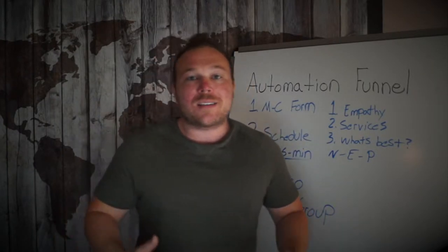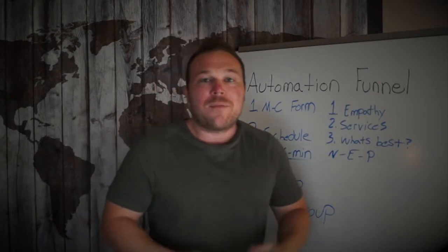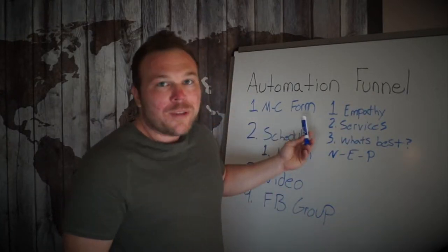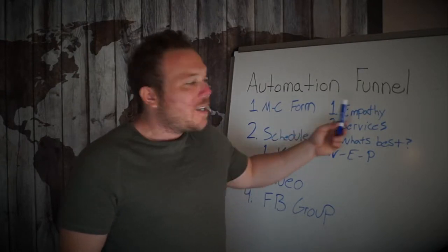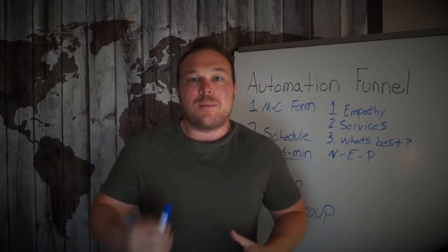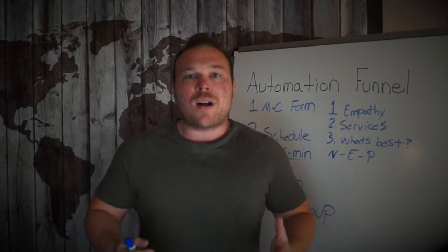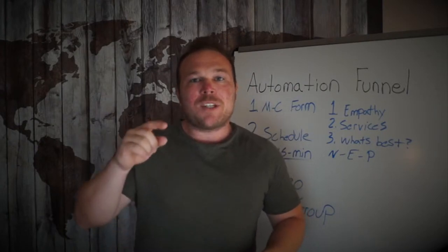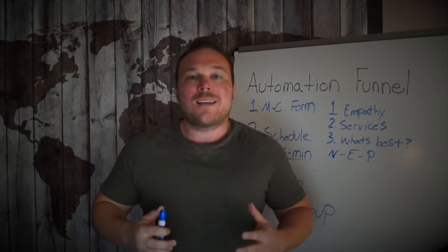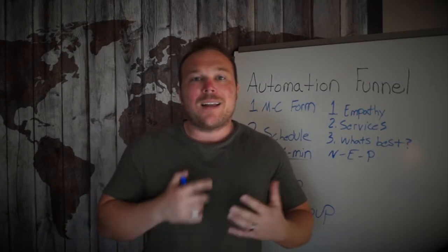In the coaching call, we went over having one automation funnel. Starting out, you need some sort of multiple choice form. In that form, ask them a couple questions which makes them much more likely to commit. If you show empathy, show that you know what their problems are, and make it easy for them to check off those multiple choice questionnaires, they're much more likely to get to the next step. That would be step one: finding out what they're looking for.